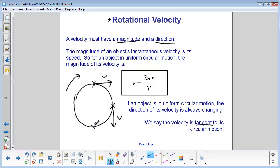If it was here at the bottom, the velocity would be towards the left. And if it was here at the left, the velocity would be towards the top. So these directions of the velocity are always tangent to the circle.